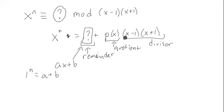Now, if we plug in negative 1, this whole thing will be 0 again. And over here we'd have negative 1 to the n is equal to negative a plus b.